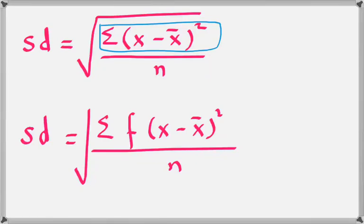This is the second video on mean and standard deviation. First, look at the alternative formulas for standard deviation sigma. The numerator is Σ(x − x̄)², n is the denominator, and the square root is there because the square root of variance is standard deviation. Without the square root, it is the formula for variance — the numerator itself is one single unit.